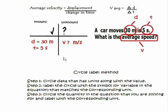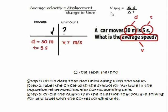Next, set up a table for your knowns and unknowns to help organize your data. You don't have to do this, but it's really good for beginners. Put all your known data in the left column: distance is 30 meters, time is 5 seconds. In the unknown column, put what you're looking for — our average speed. Speed in physics is V, so put a question mark with the units to make sure your answer makes sense.